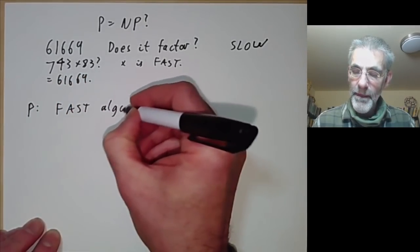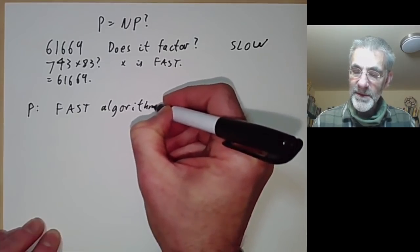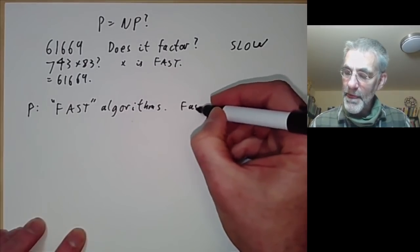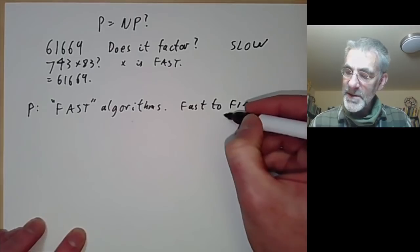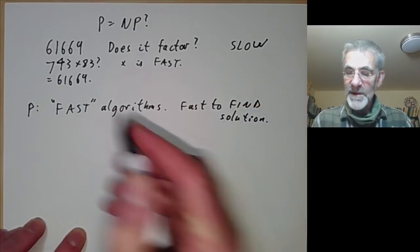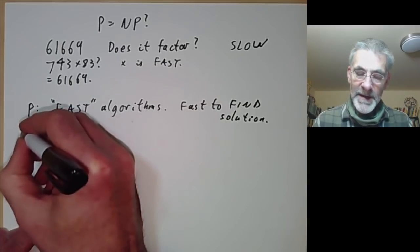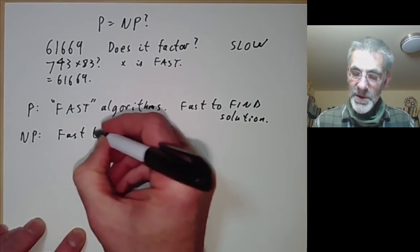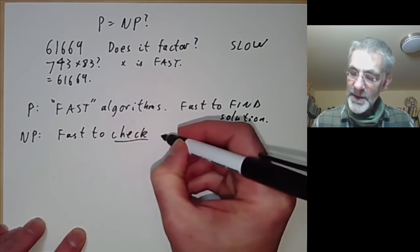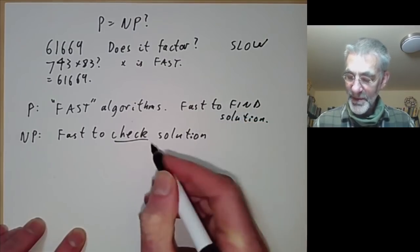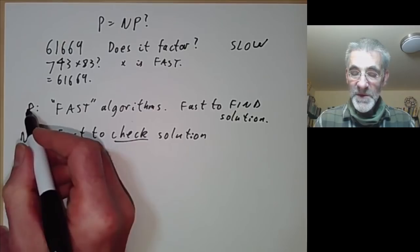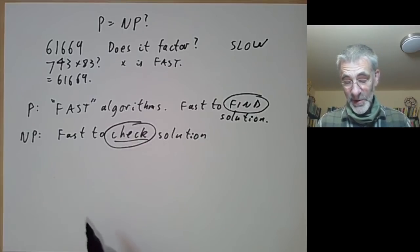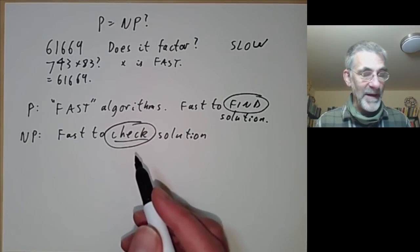So this is not actually correct, I'll put this in inverted commas. P means it is fast to find a solution to a problem — for example, multiplication is fast. On the other hand, NP means it is fast to check a solution once you've found one. So the difference between P and NP is the difference between finding a solution and checking that a solution somebody else has come up with is in fact correct.